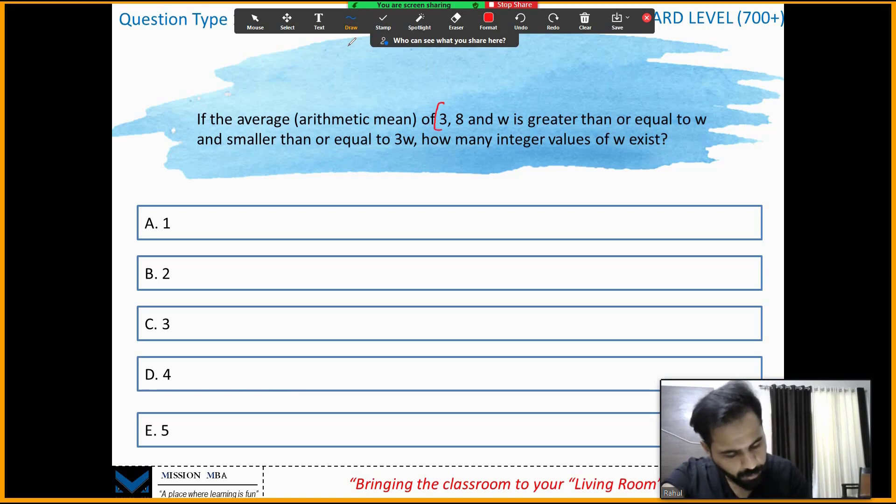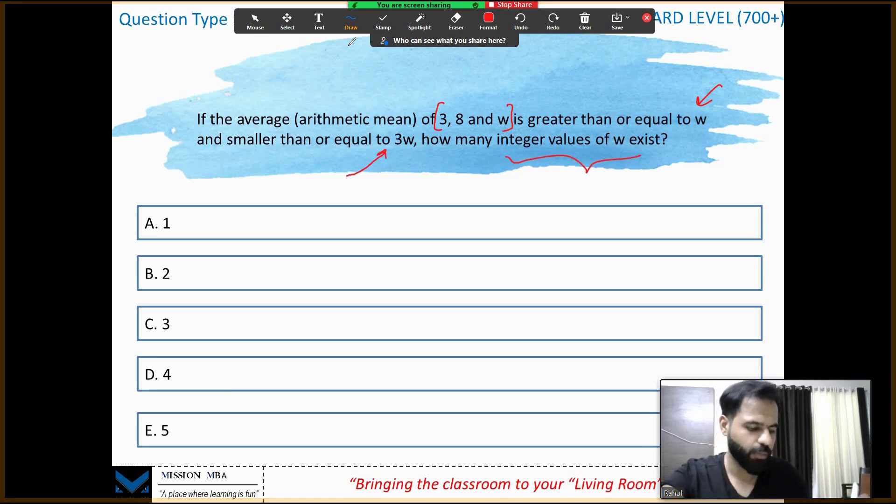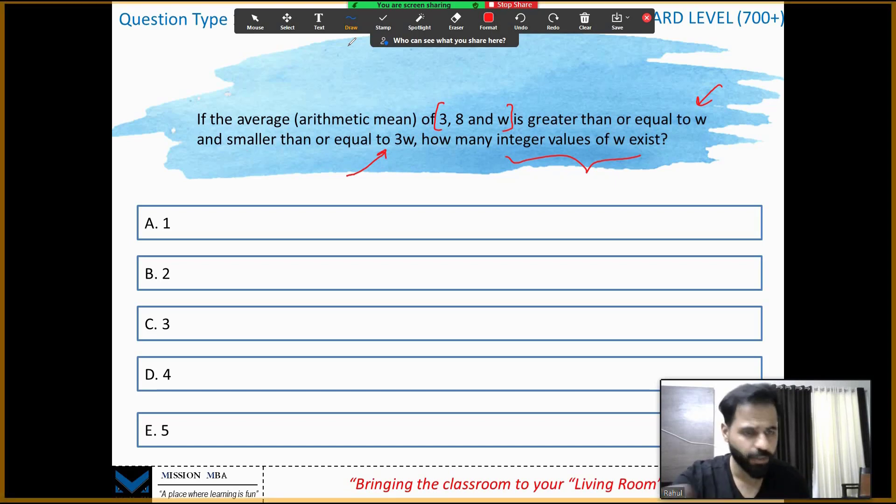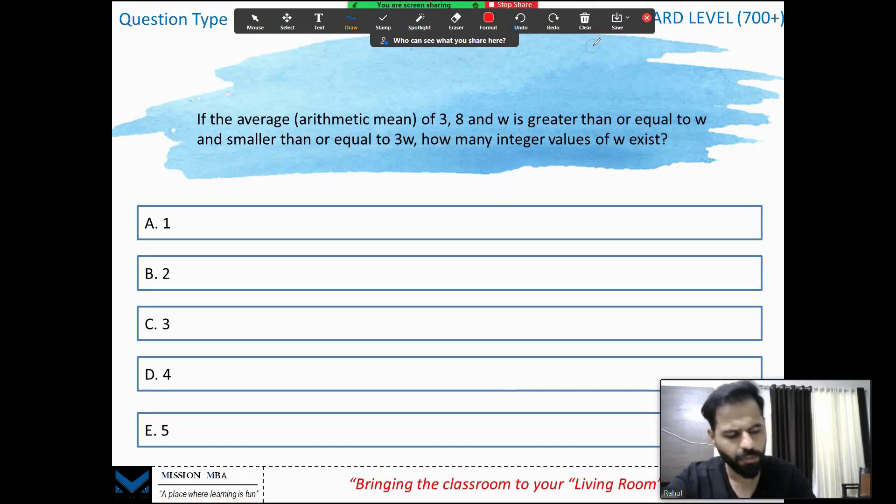Let's move to the next question. If the average of 3, 8, and w is greater than or equal to w and less than or equal to 3w, you're looking for the number of values of w, integral values. Many times you get such questions looking for integral values of some specific number.